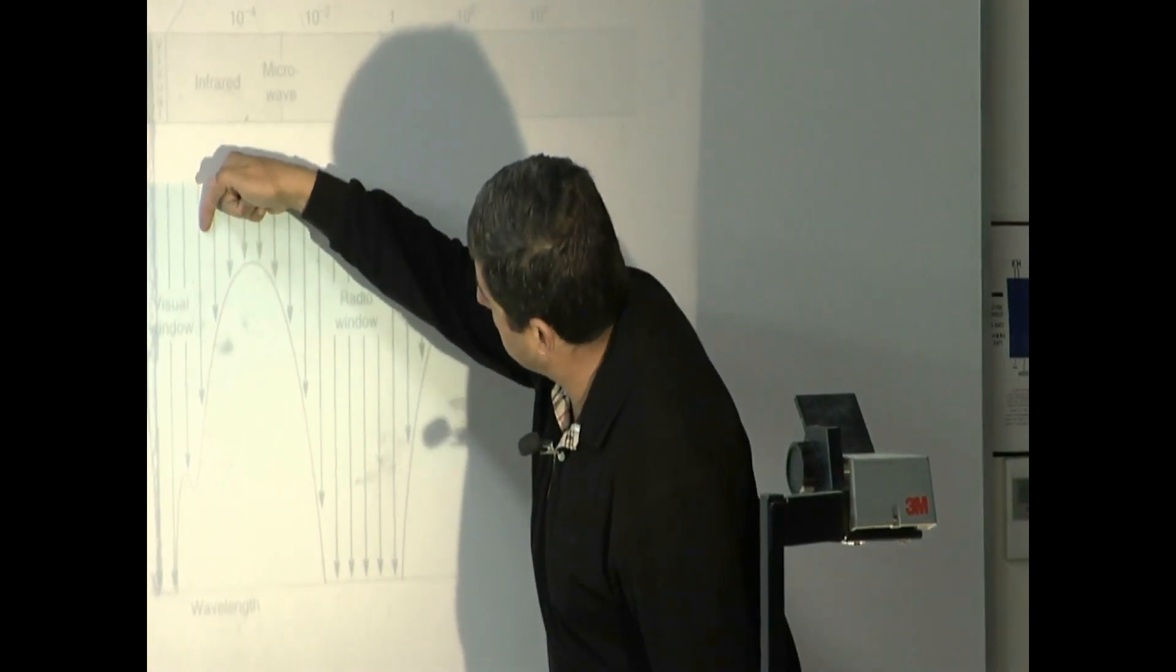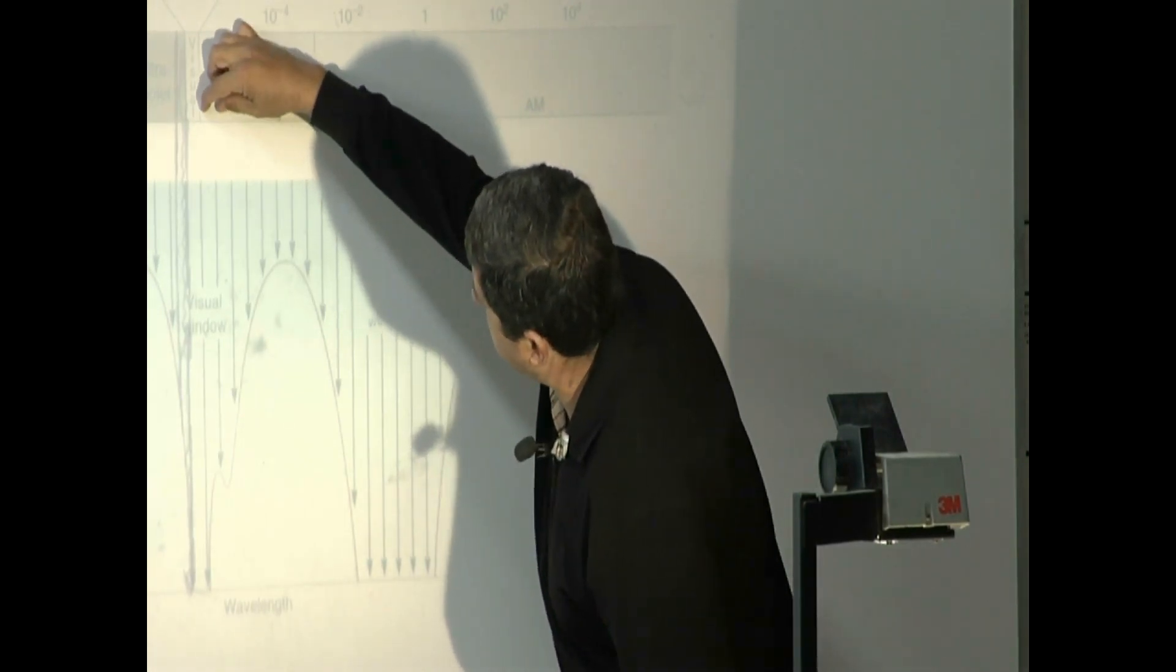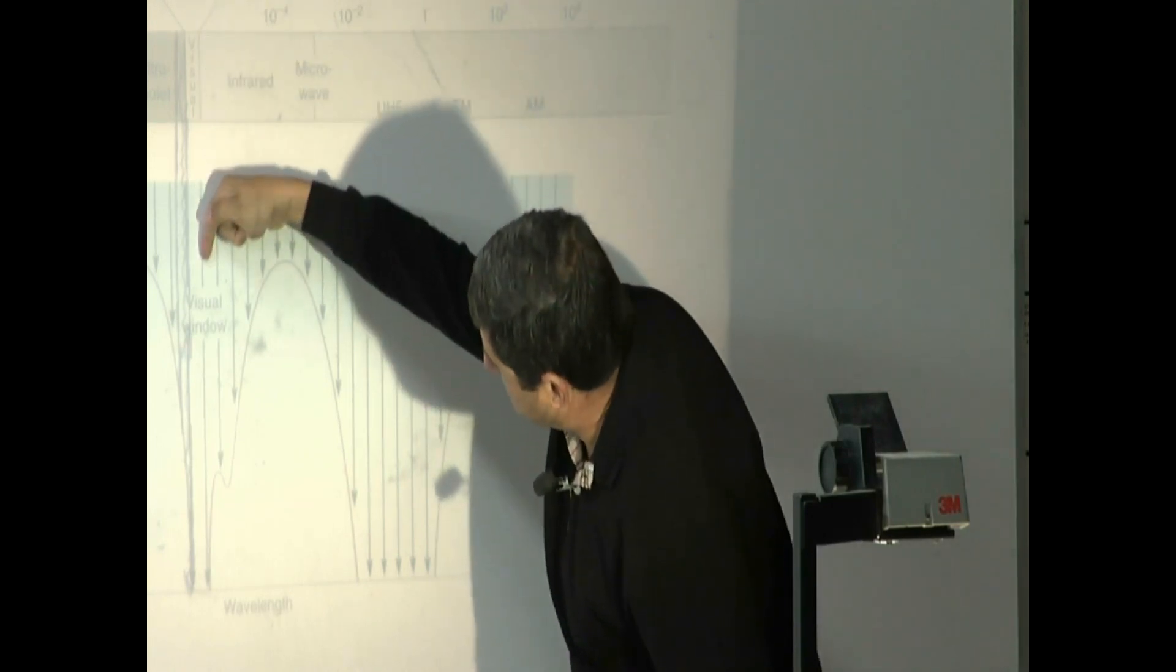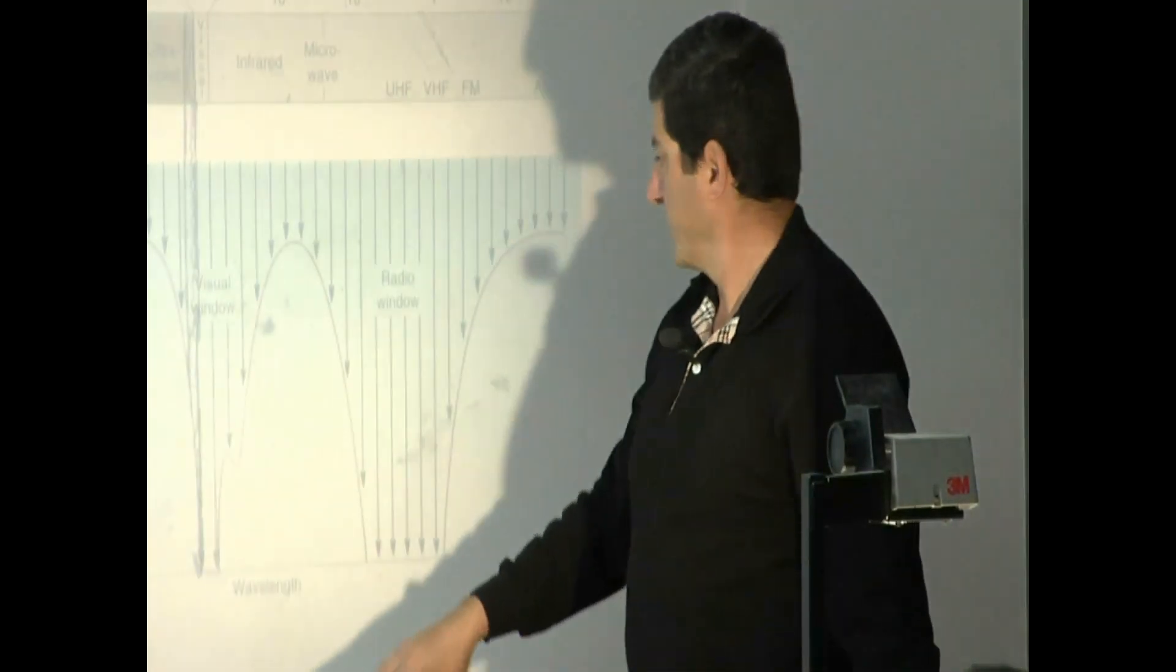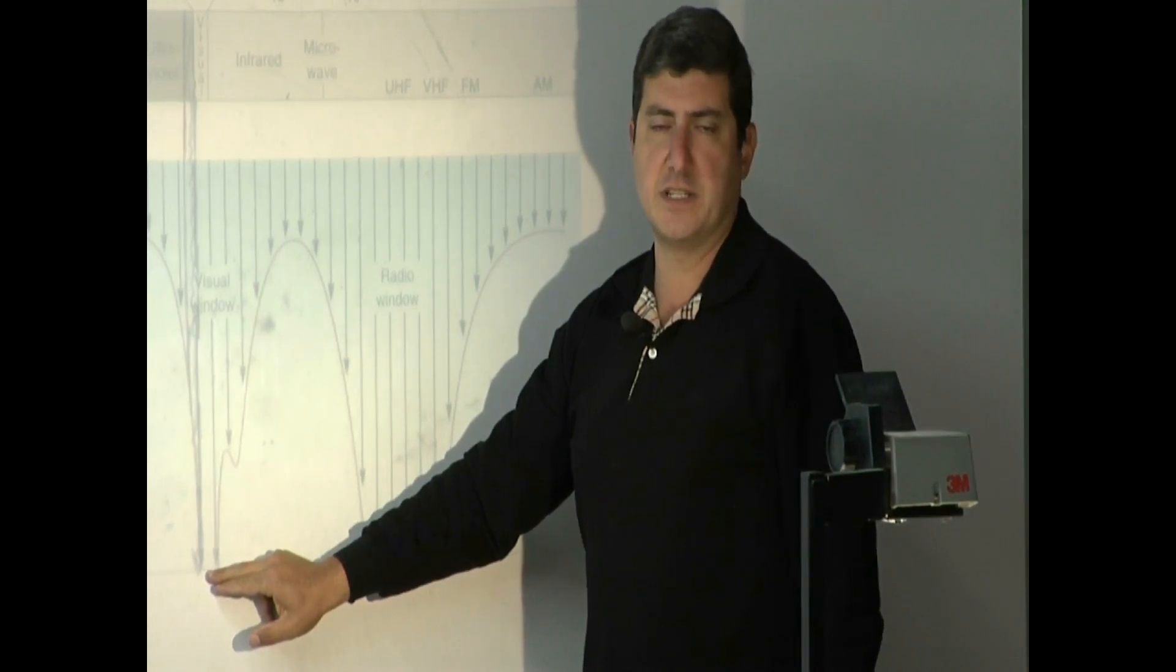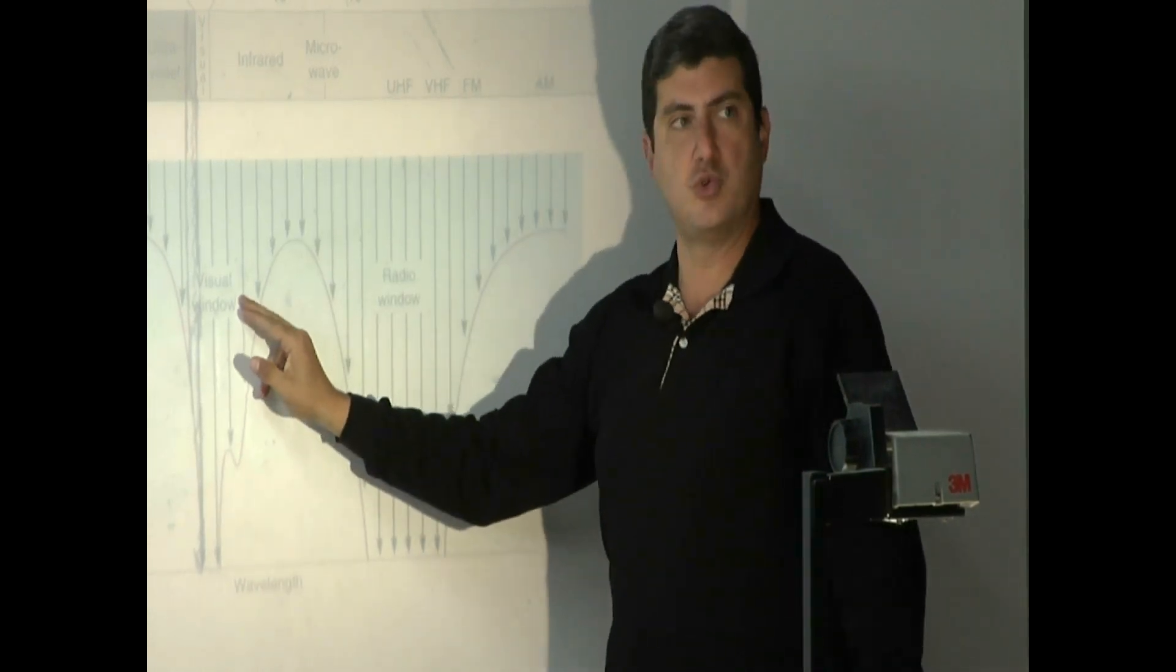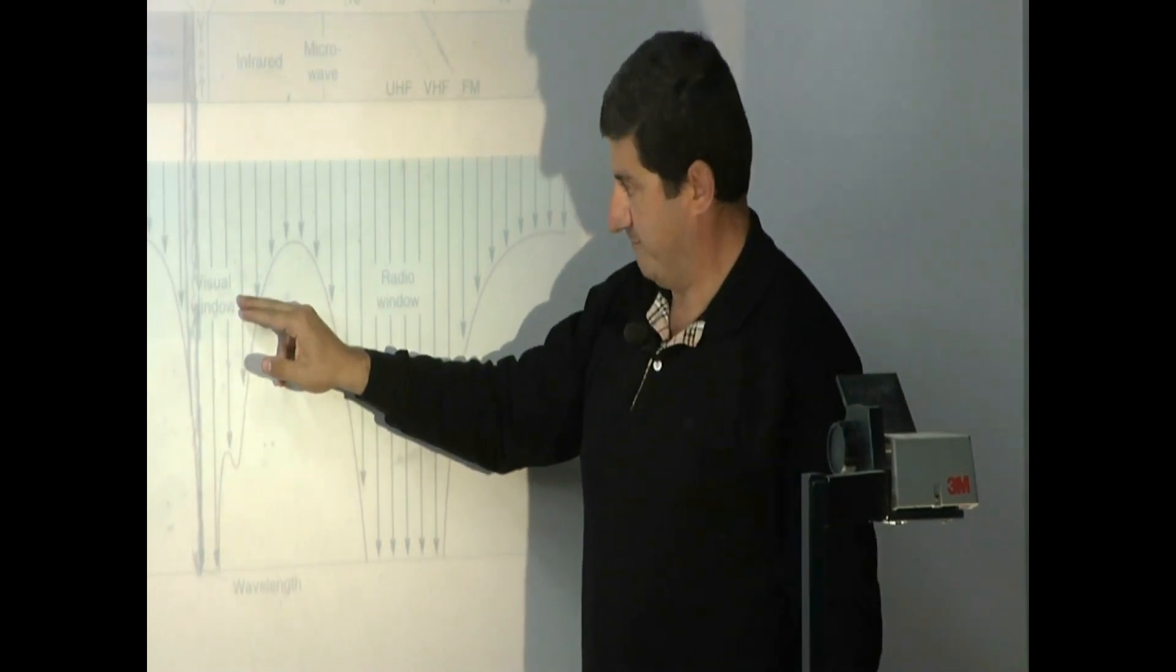The infrared goes all the way, some of it makes it all the way down here. This part of the infrared, the one that's close to the visual, it makes it all the way down to the ground. So depending on which part of the infrared we're trying to picture, if we're trying to do this part of the infrared, which is close to the visible, then we can keep the satellite here on the ground. If we want to do this part of the infrared, then we have to send it to at least somewhere in the atmosphere, in the mid-range atmosphere.